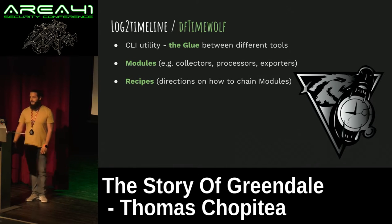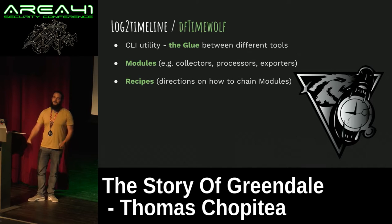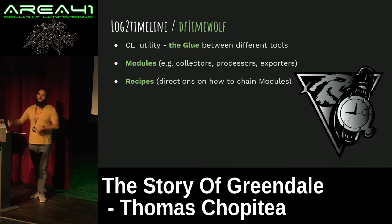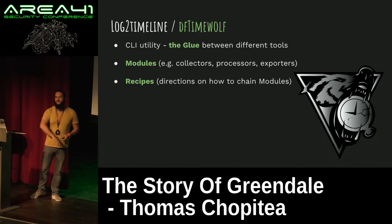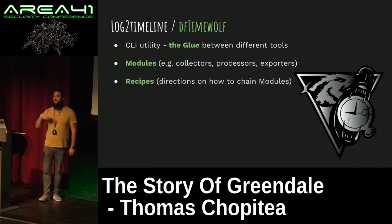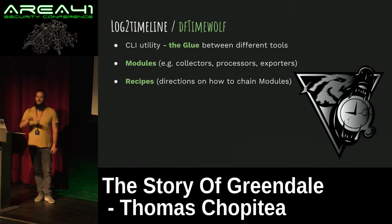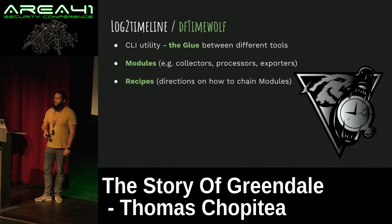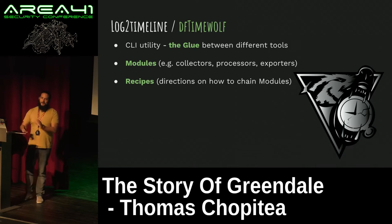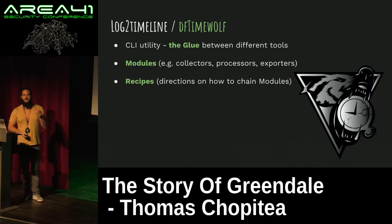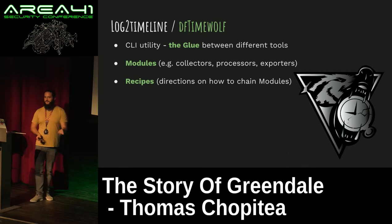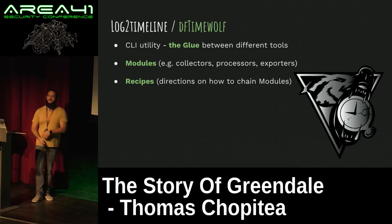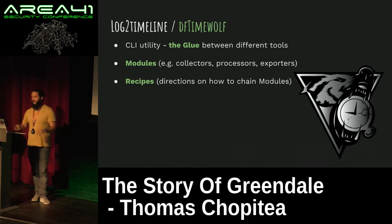Now, DFTimeWolf. This might be more interesting for you guys. DFTimeWolf is basically a CLI tool that acts as the glue between Grr, Plazo, and TimeSketch. Because otherwise, what you'd have to do is open your browser, go to the Grr interface, select the kind of hunts you want, select which host, select all the artifacts — then wait until it runs, download the results, send them to Plazo and then to TimeSketch. That's a bit annoying. DFTimeWolf does all of this with a single command. Because it's not the only system we have, we built it so you can extend it pretty easily — that's where we have modules. Each module is a way to interact with another system: collectors for Grr, processor modules for Plazo, and exporter modules for TimeSketch.